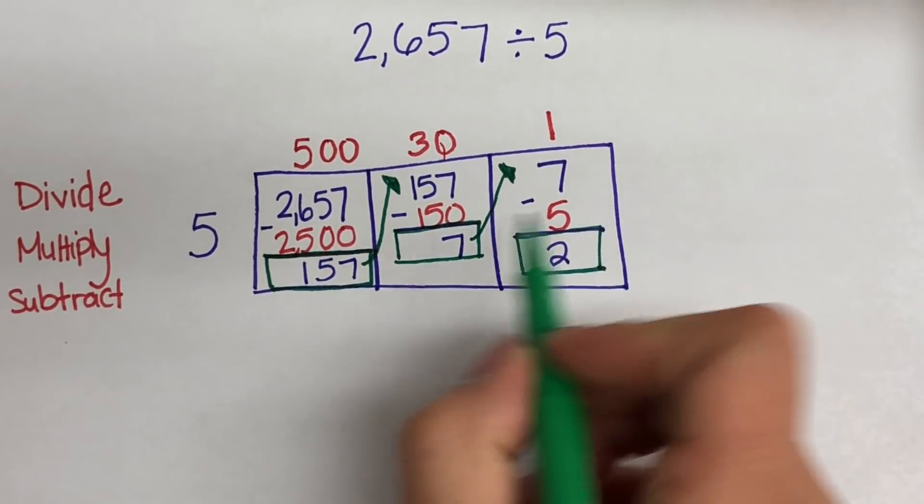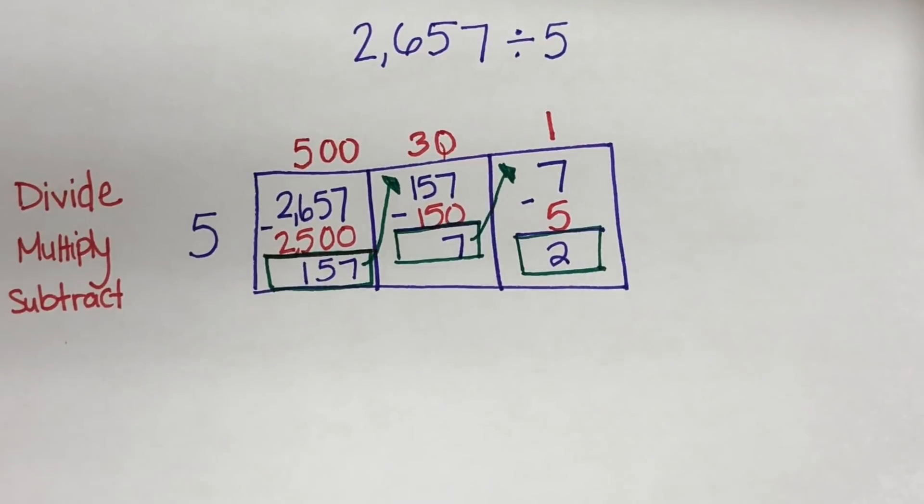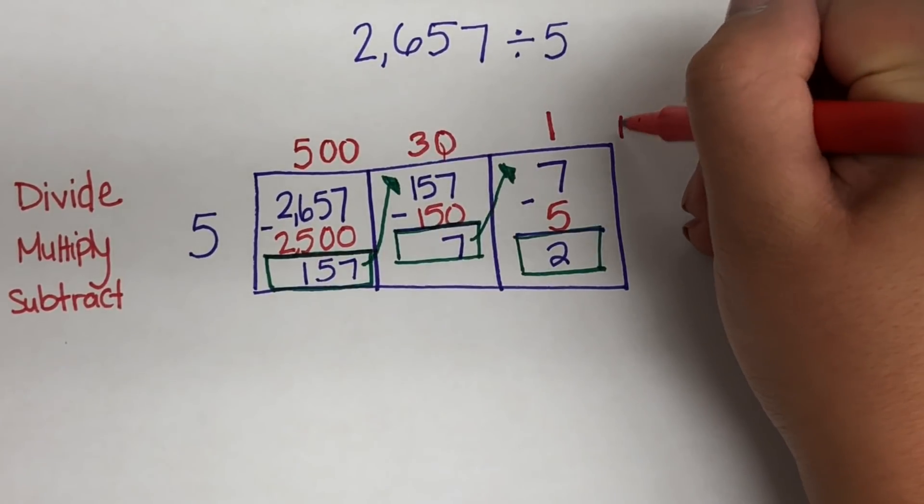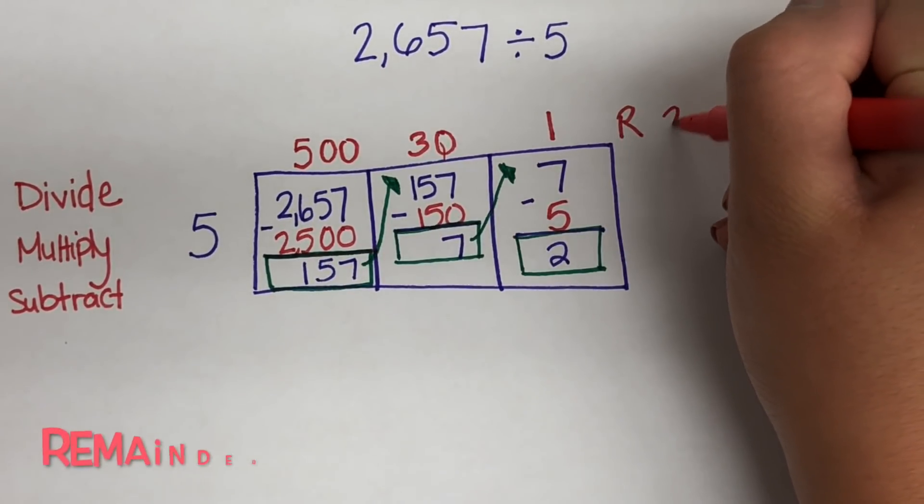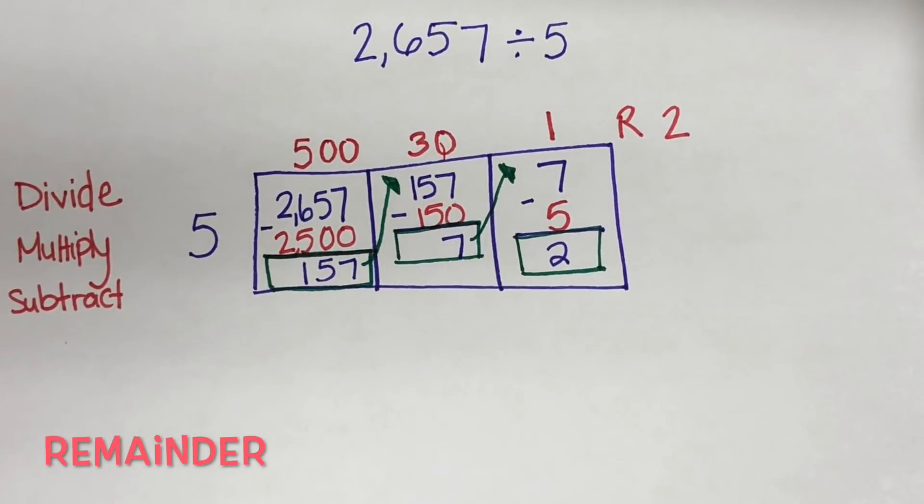But you might be noticing that, well, 5 doesn't fit into 2. And there are no more numbers in our problem here, so we cannot divide any further. So 2 is our leftover, which we call our remainder. It is what is remaining. So 2 becomes our remainder, which we represent with our R2.